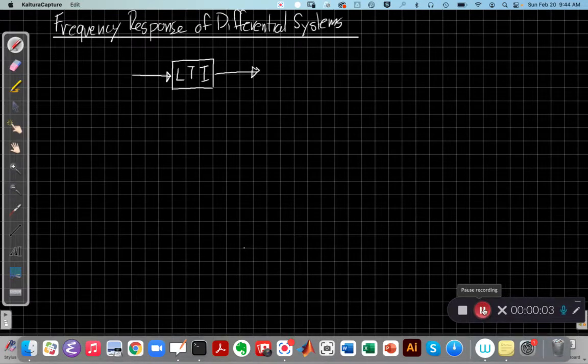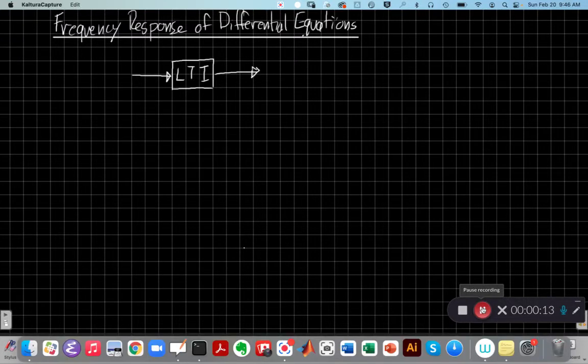Hello everyone, this is John Buck. Welcome back to another Continuous Time Linear Systems video. In today's video, we're going to talk about finding the frequency response for systems that are represented by differential equations. In our last video, we looked at how we can implement filtering for periodic signals represented by the Continuous Time Fourier series.